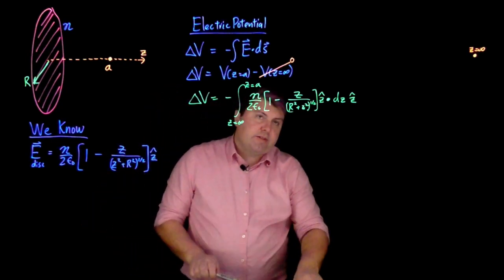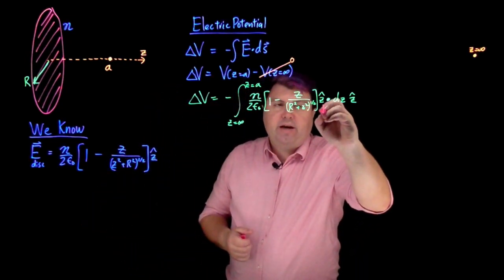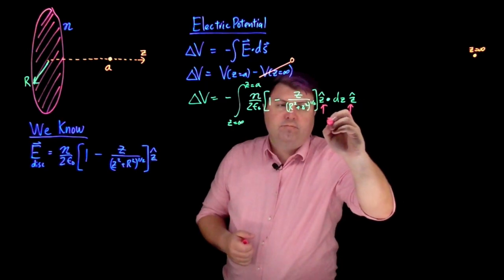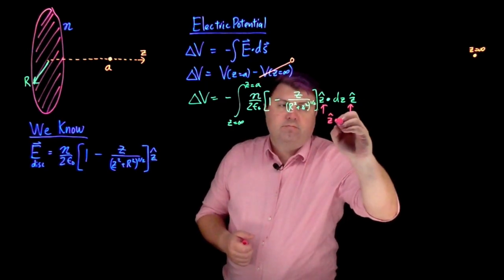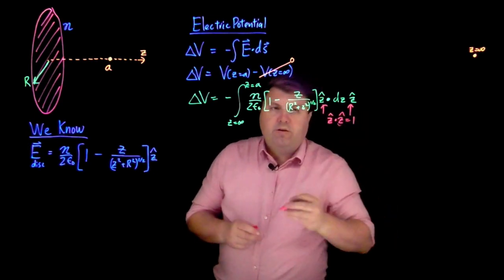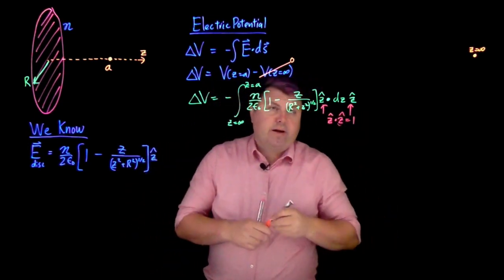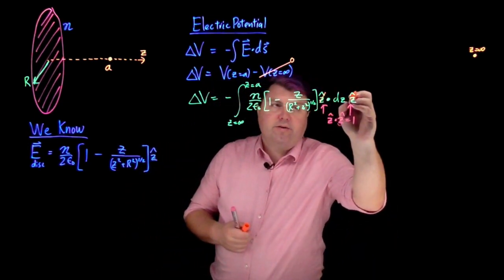So as I do this, I can notice that z hat dotted with z hat equals one. So what I can do is I can just cancel out this.